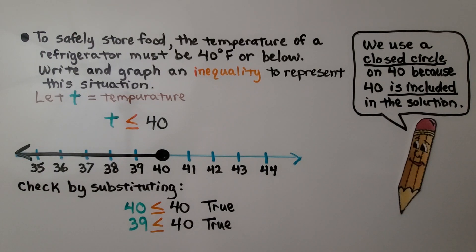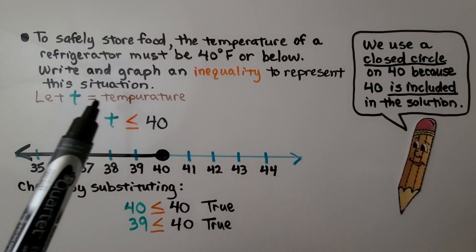To safely store food, the temperature of a refrigerator must be 40 degrees Fahrenheit or below. Write and graph an inequality to represent this situation. So we're going to let T equal temperature.